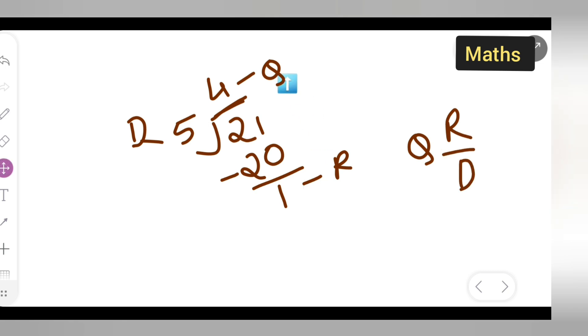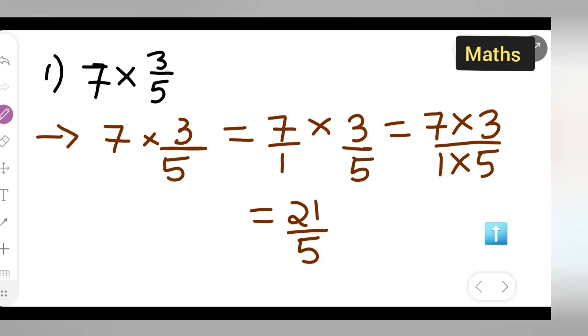Now the quotient here is 4. Remainder is 1. So 4, remainder 1 upon, now your D is nothing but what? Your D is nothing but 5. So you all have to write down here 5. So if you all want to write this in a mixed fraction form you all can write down it as 4 and 1 upon 5.